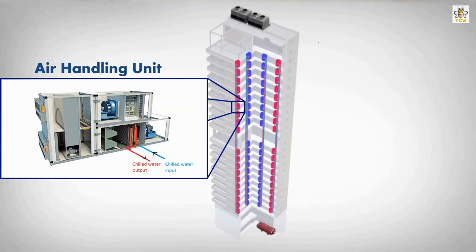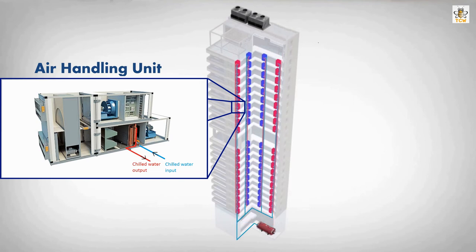The air handling unit is connected by two water pipes. The light blue pipe is for the chilled water inlet, which is used to cool the air. The red pipe is for the chilled water outlet, which is hotter as it absorbs heat from the air passing through the coil. These two pipes flow from and to the chiller.